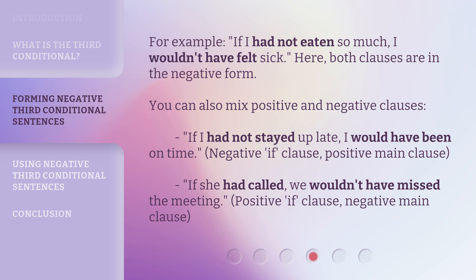You can also mix positive and negative clauses. For example: if I had not stayed up late, I would have been on time — negative if clause, positive main clause. If she had called, we wouldn't have missed the meeting — positive if clause, negative main clause.